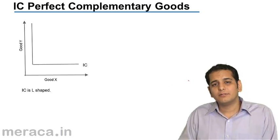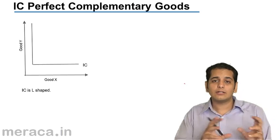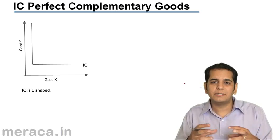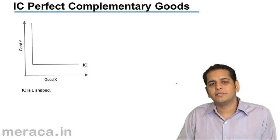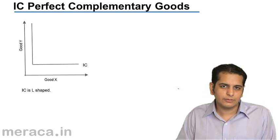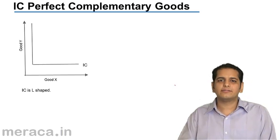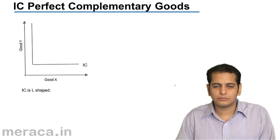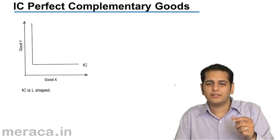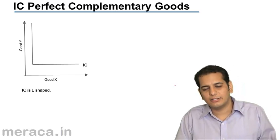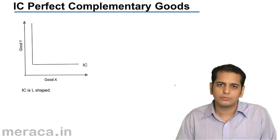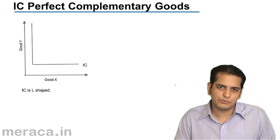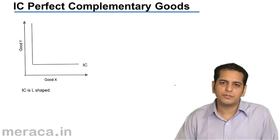How do you think will be the shape of the indifference curve in case the goods are complementary to each other — of a nature wherein they complete each other? Let's take an example of shoes. In shoes, we always wear them in pairs. We have a left foot shoe and a right foot shoe. The left shoe completes the right shoe and the right shoe completes the left shoe. So we can say that both are complementary to each other.